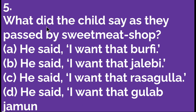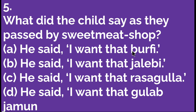Fifth question: what did the child say as they passed by the sweetmeats shop? Option A: he said, 'I want that barfi.' Option B: he said, 'I want that jalebi.' Option C: he said, 'I want that rasgulla.' Option D: he said, 'I want that gulab jamun.' The child said, 'I want that barfi.' So A is the right option. Let's move to the next question.